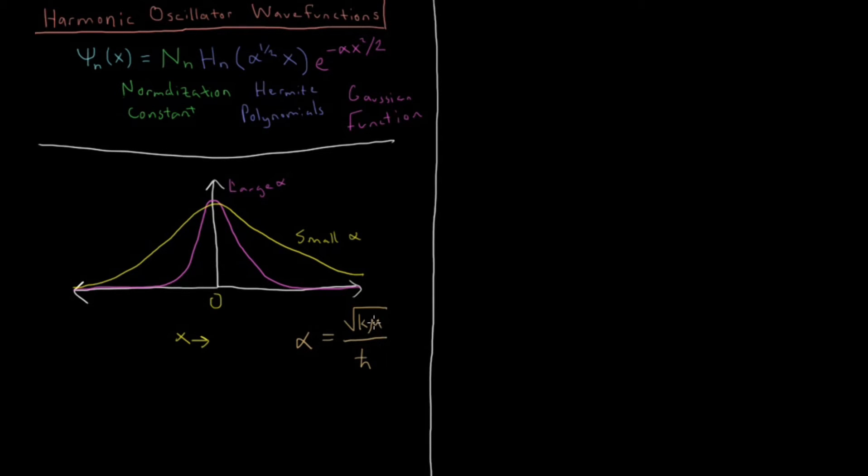So in the limit of a very large mass, we would just have classical mechanics and the particle could exist at the bottom of the well. So that's why the alpha gets more, this Gaussian gets more contracted as the mass increases. Very, very light things will have to spread themselves out.